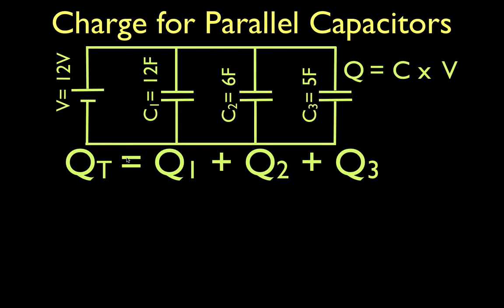All right, so we're going to figure out the charge on each of the individual capacitors first. So that means to get the charge on capacitor number one, we have to take the capacitance of number one times the voltage, and that's pretty straightforward because we're given the capacitance, and we know that when we have capacitors in parallel,